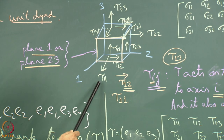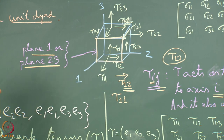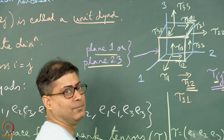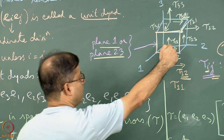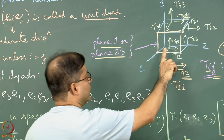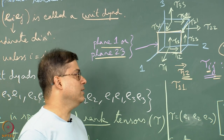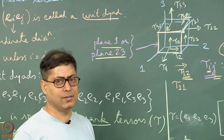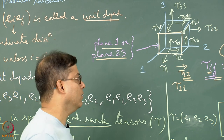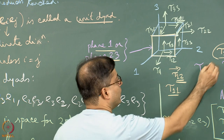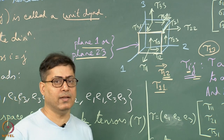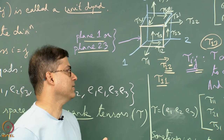Out of these three stresses, tau_11 is a normal stress acting perpendicular to the orange plane. Tau_12 and tau_13 are shearing stresses working parallel to the plane in two orthogonal directions. As per the drawing, tau_11 acts in the positive direction of axis 1, tau_12 in the positive direction of axis 2, and tau_13 in the positive direction of axis 3. So tau_11, tau_12 and tau_13 are all greater than zero.